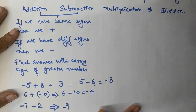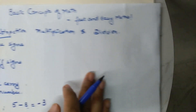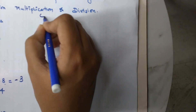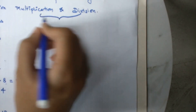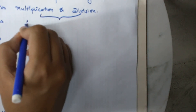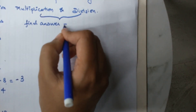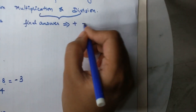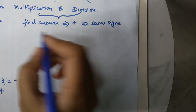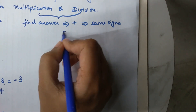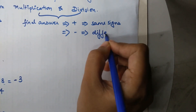Moving on, we will now discuss the rules for multiplication and division. The rule is simple: here you only need to worry about the sign of your final answer. The answer will be positive if the signs are the same, and negative if the signs are different.